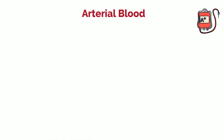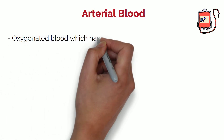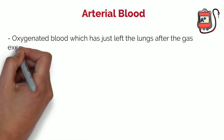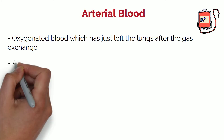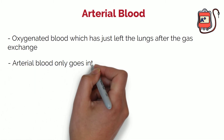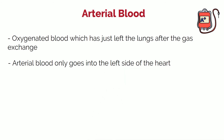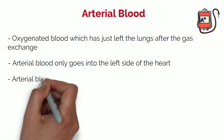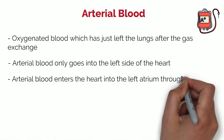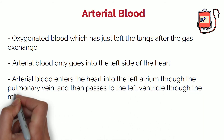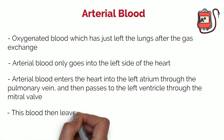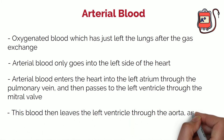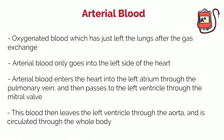Arterial blood is the blood that contains oxygen, as it has just left the lungs after gas exchange. Think of it as clean blood. This clean blood only goes into the left side of the heart — the clean side. It enters the heart into the left atrium through the pulmonary vein, and then passes to the left ventricle through the mitral valve. This clean blood then leaves the left ventricle through the aorta, which is the largest artery in your body.